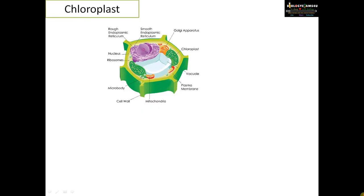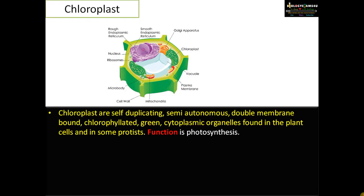Starting with the definition of chloroplast: chloroplasts are self-duplicating, semi-autonomous, double membrane bound, chlorophyllated, green, cytoplasmic organelles found in plant cells and in some protists.